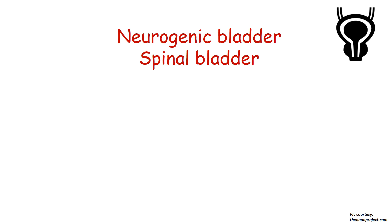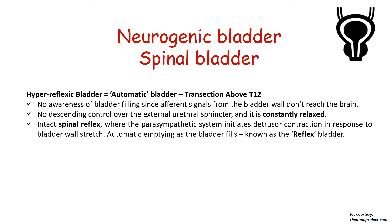The spinal bladder can either be a hyperreflexic bladder or an automatic bladder when the level of lesion in the spinal cord is above T12. In this, there is no awareness of bladder filling since the afferent signals from the bladder don't reach the brain, and there is no descending control over the external urethral sphincter, which is constantly relaxed. However, the spinal reflex is intact. The parasympathetic system initiates detrusor contraction in response to the stretch receptors in the bladder wall, and there is automatic emptying as soon as the bladder fills. This is referred to as a reflex bladder.